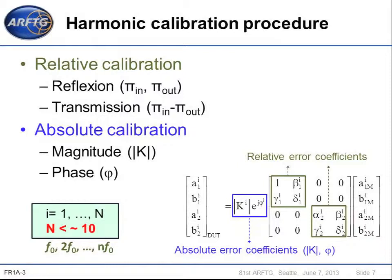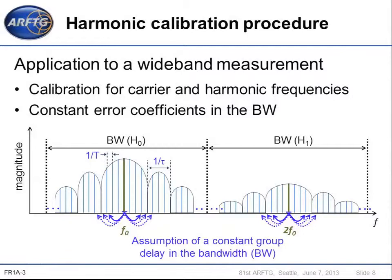The number of frequencies is limited to the number of harmonics taken into account. We have two steps for this calibration. The first is the relative calibration, which is the SOL calibration as used in VNA — connecting short, open, load to port 1 and then port 2 and establishing a through connection between them. The second step is the absolute calibration, which is to determine the complex error coefficient. We use a power meter for the amplitude and a harmonic phase reference to determine the phase. This calibration is dedicated for CW measurements but can also be used for wideband measurements. However, to apply this calibration for wideband measurements, we must assume that the system has a constant group delay in the bandwidth, considering that the error coefficient has constant values in a bandwidth around carrier and harmonic.